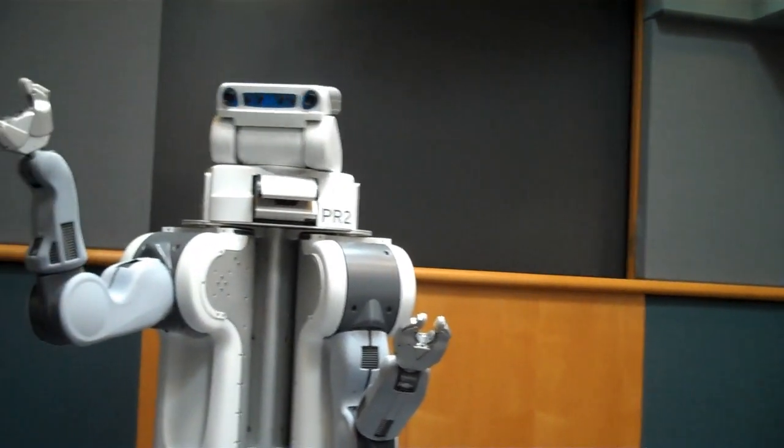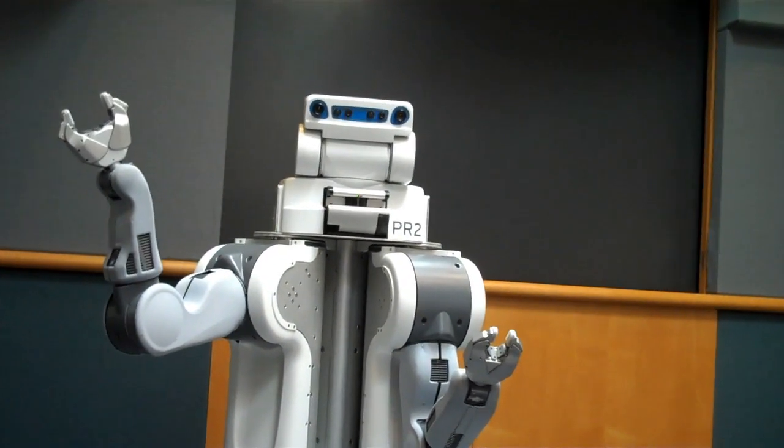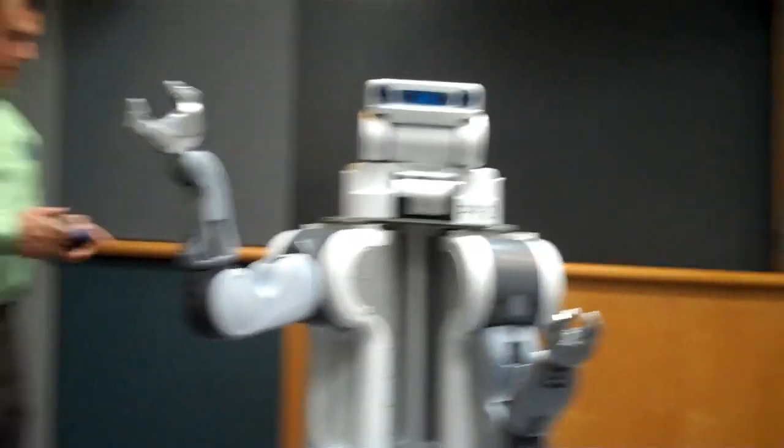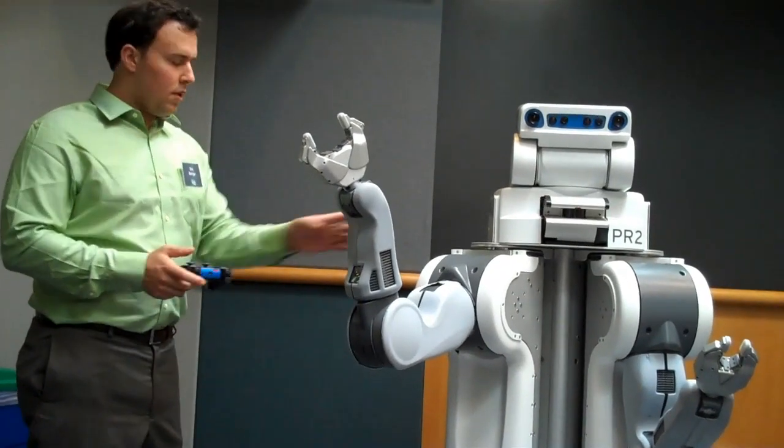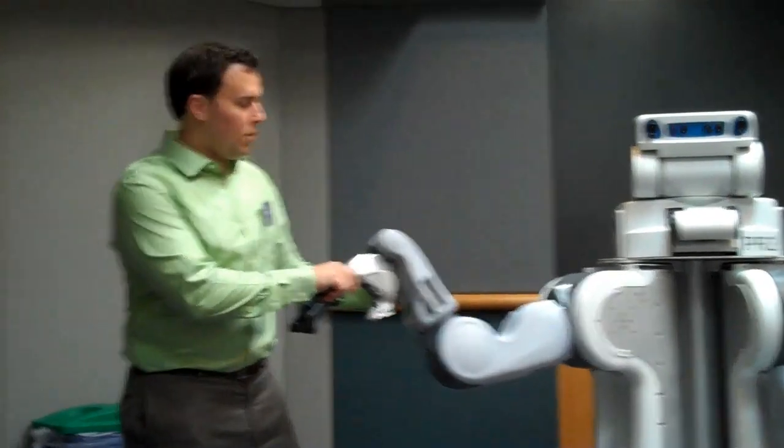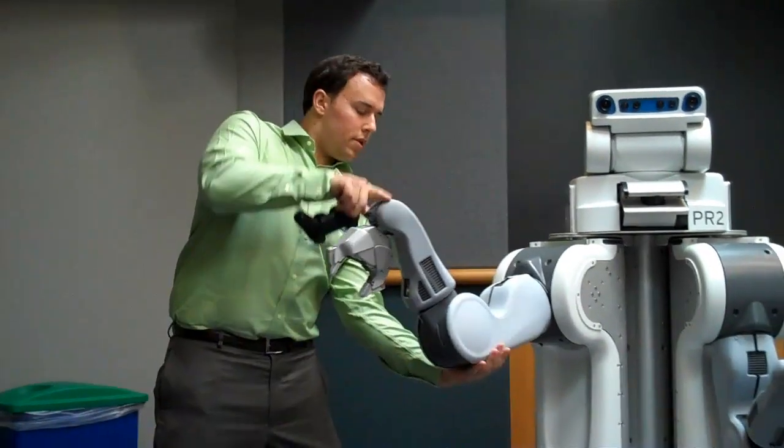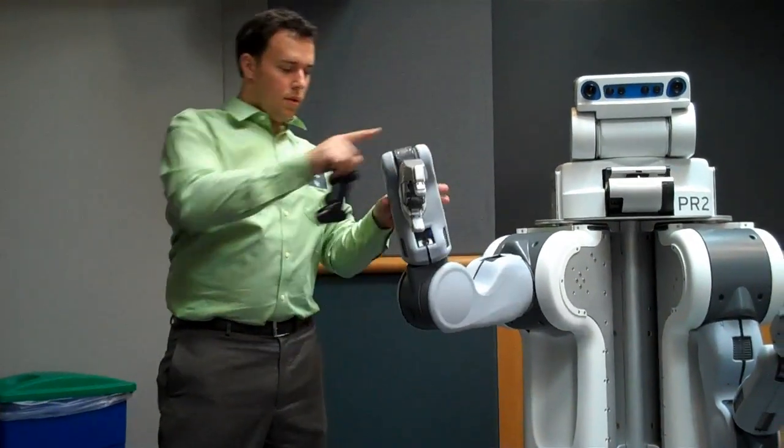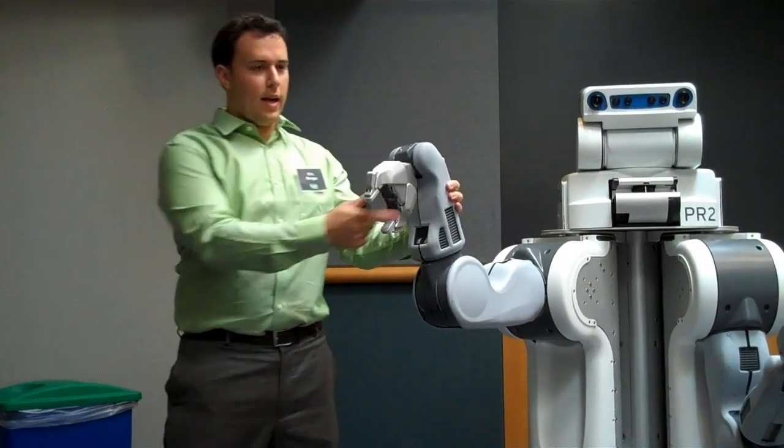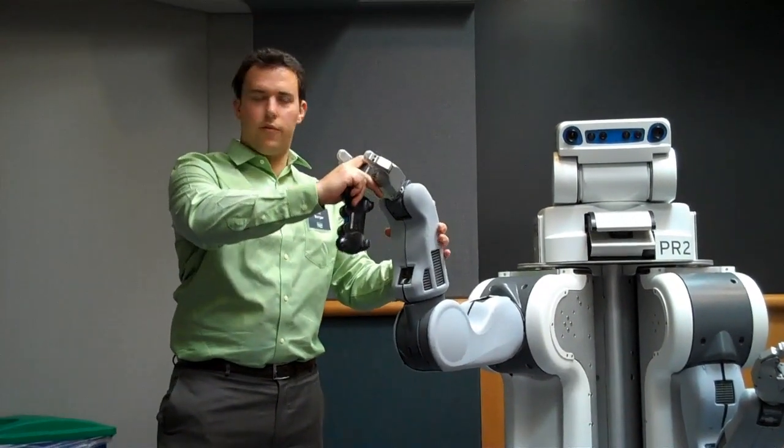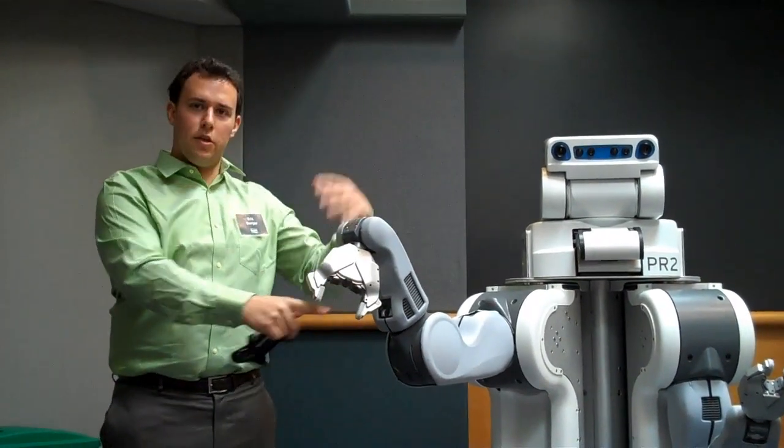So the degrees of freedom, the head goes up and down, right and left. The laser scanner, you can see it tilting. The arm itself, you can see moves. It has one, two, three, four, five, six, and seven degrees of freedom, which is pretty similar to what a human can do.